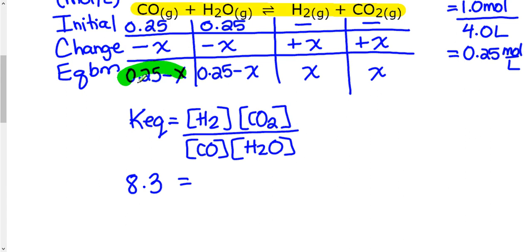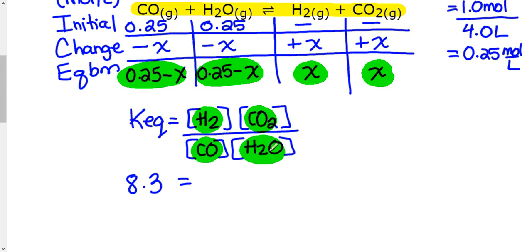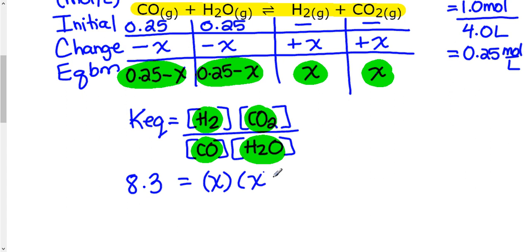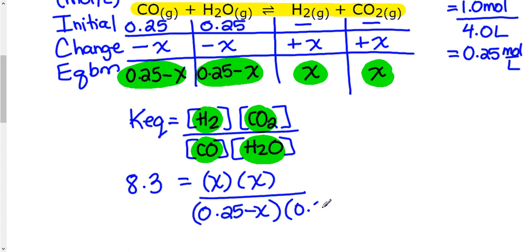This expression represents concentrations at equilibrium, so we use the values from the bottom row of our ICE table — the ones highlighted in green. Where we see carbon monoxide we put 0.25 minus x, same for water, and x goes in for both products. So we have x times x over (0.25 minus x) times (0.25 minus x), set equal to 8.3. At this point it becomes a math problem — we need to solve for x.